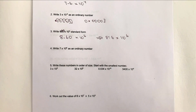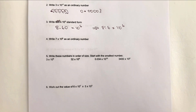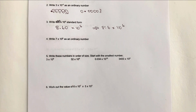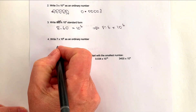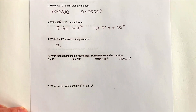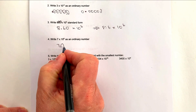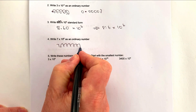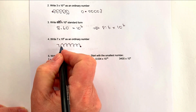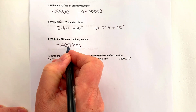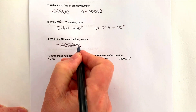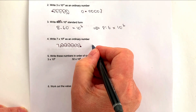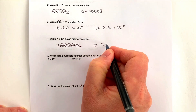Let's look at number 4: write 7 times 10 to the power of 6 as an ordinary number. It's going to be six jumps. I've got 7, here's the decimal point, and I'm going to move it six places. So that's going to be 7 followed by 6 zeros — which is 7,000,000.